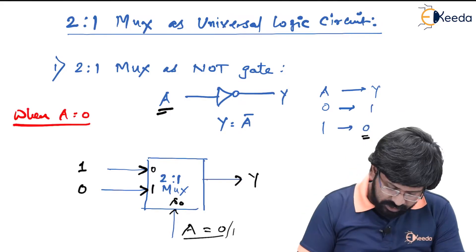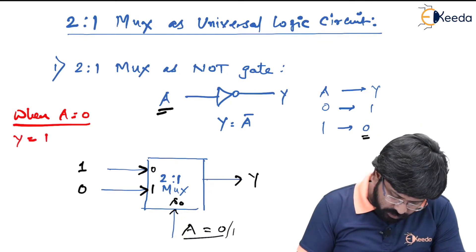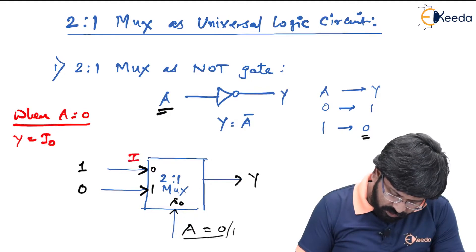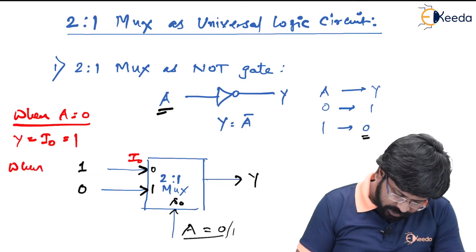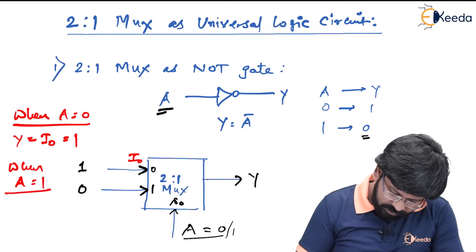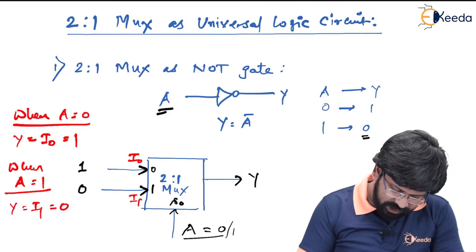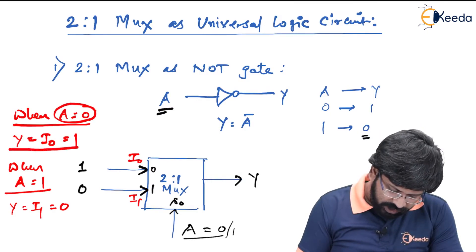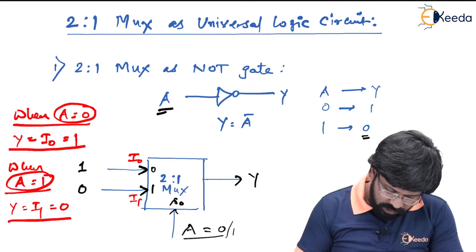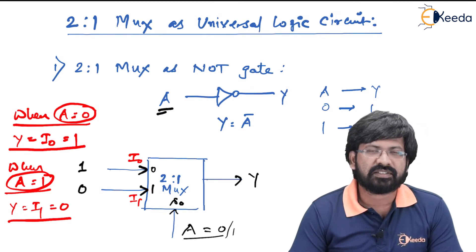Let us cross check this. When A is equal to 0, Y is equal to I0, and as you can see I0 is connected to 1, so Y equal to 1. Similarly, when A is equal to 1, Y is always equal to I1, but I1 is already connected to 0, so Y is equal to 0. So when A equal to 0, Y equal to 1 and when A equal to 1, Y is equal to 0 — this is how it behaves as a NOT gate.